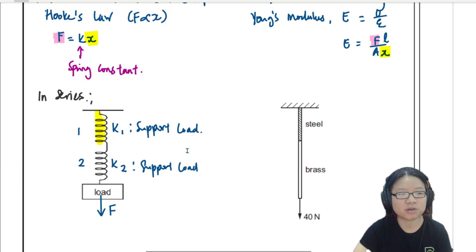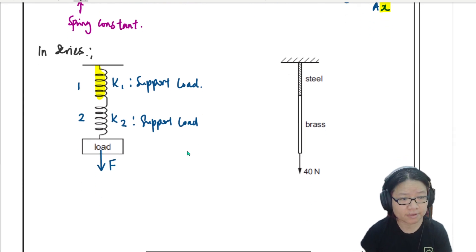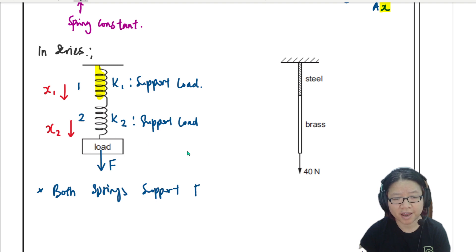So basically, the idea here is that the load is not being shared and this spring will have an extension of x1. This spring will have an extension of x2. So the whole idea here is both springs support F. And because of this, x1 + x2 is equal to total extension. That's all.